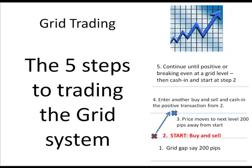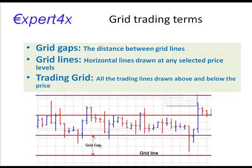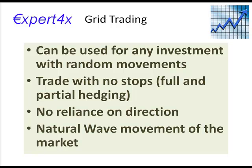Some terminology: the grid gaps are the differences between the grid lines, and in this example we've used 200 pips as our grid gap. We draw lines on the charts just for visual clarification — the trading grid is all these lines drawn on the chart. Importantly, we only need charts to establish our grids and the currencies we're going to trade. After that, trading charts are not needed, as we use pending orders and the broker's trading platform.